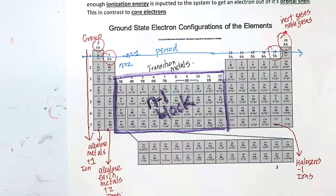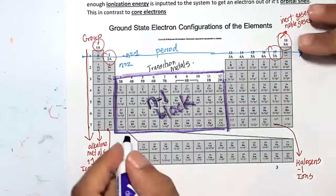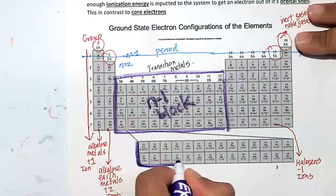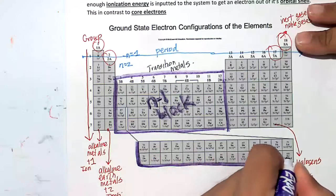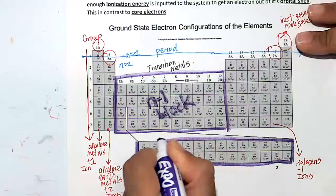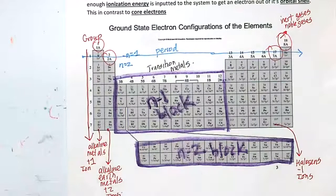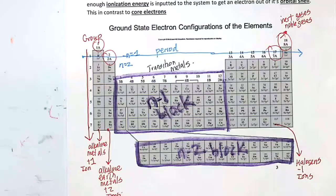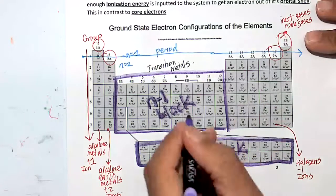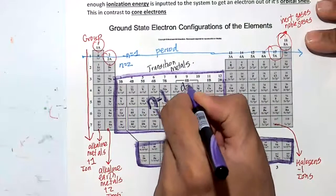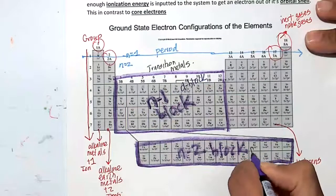And this here is the n minus 2 block going down here. By the way, the n minus 2 block, this is also called the d block. Make sure you know that term, the d block. And this is called the f block.